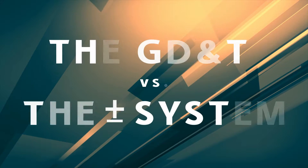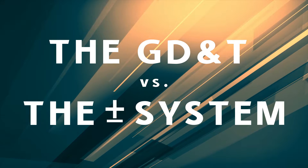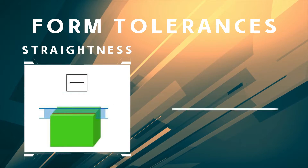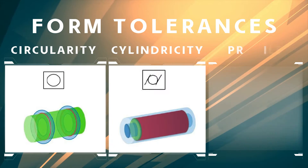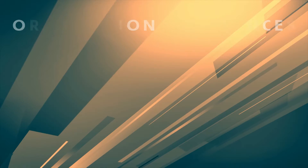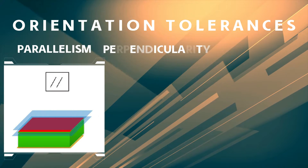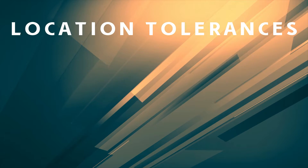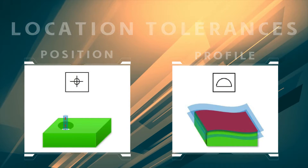We will cover topics such as the advantages of GD&T over the plus-minus tolerance system, and you will study all form tolerances such as straightness, flatness, circularity, cylindrical shape and profile tolerances. The orientation tolerances such as parallelism, perpendicularity and angularity are covered, and of course the location tolerances such as position and profile are also covered.